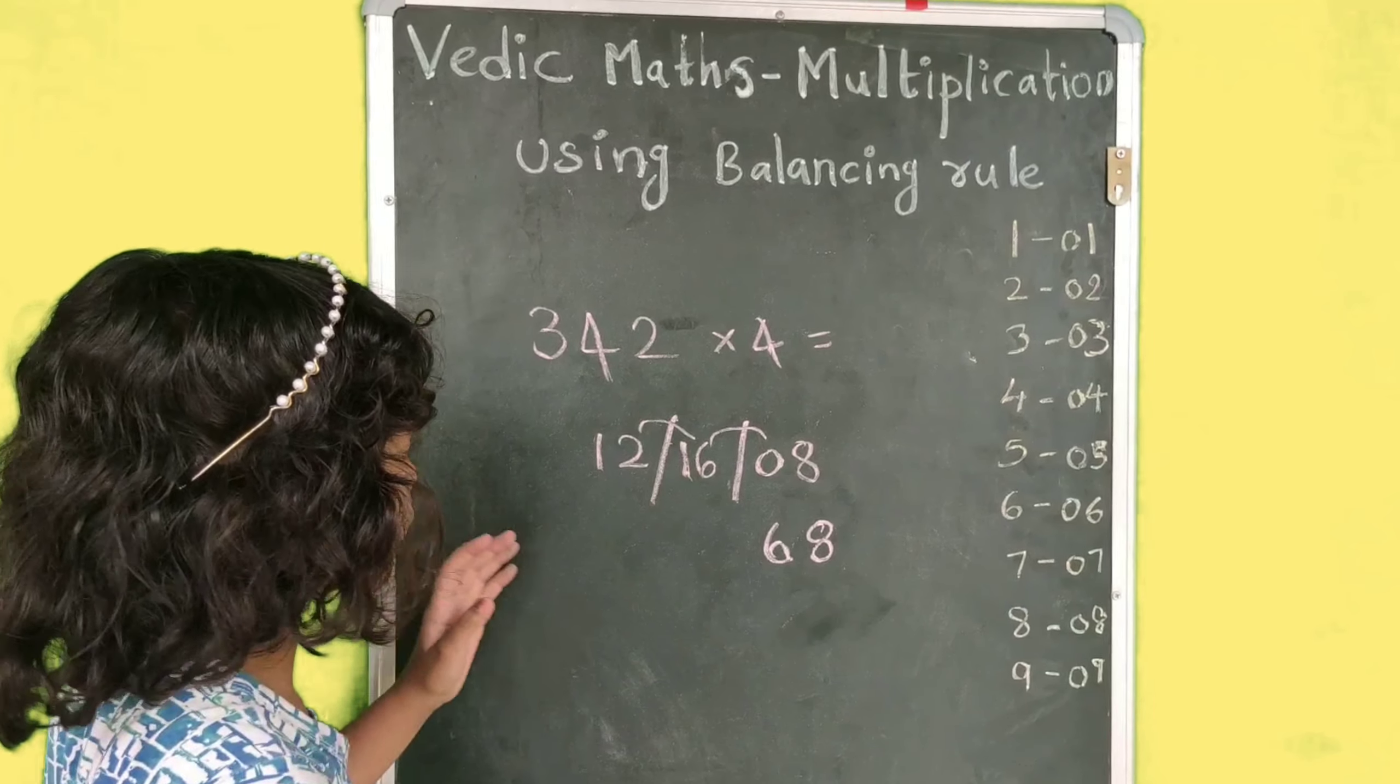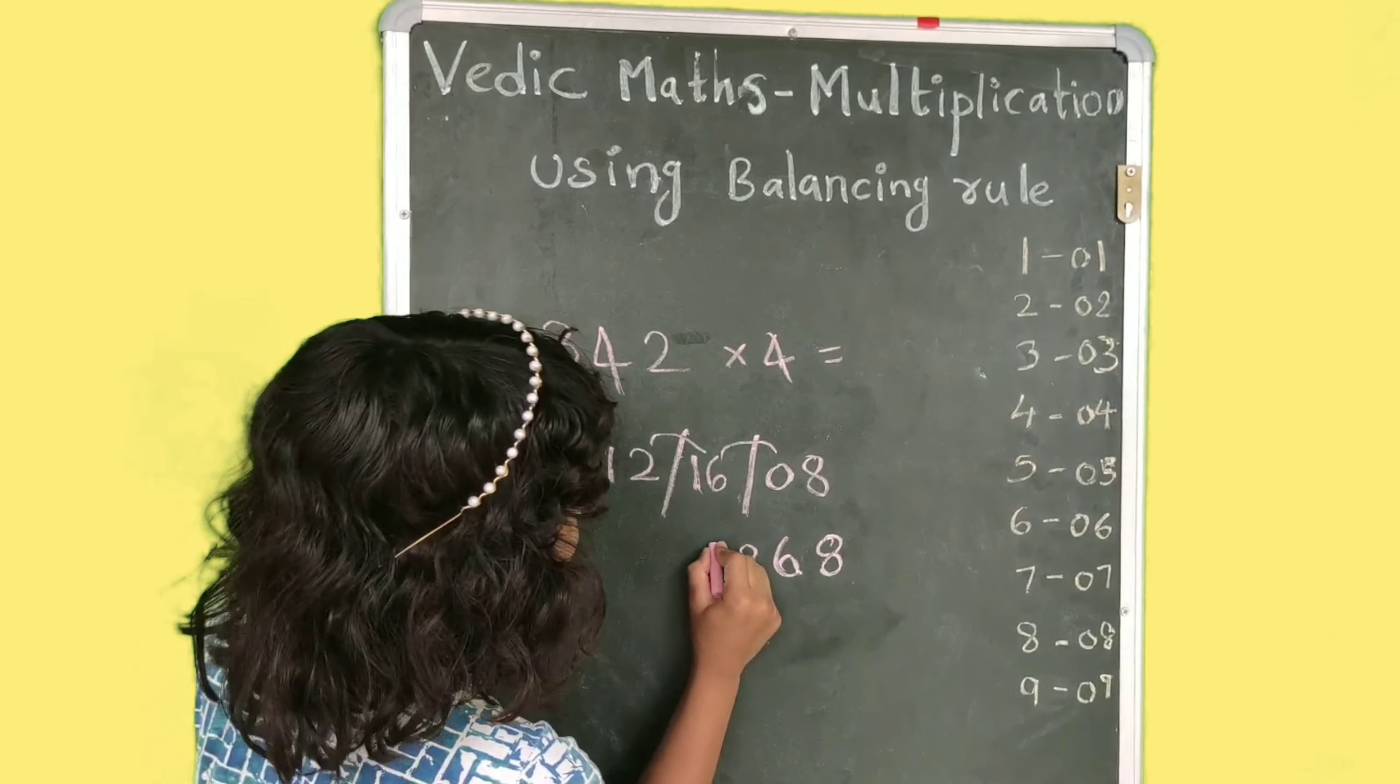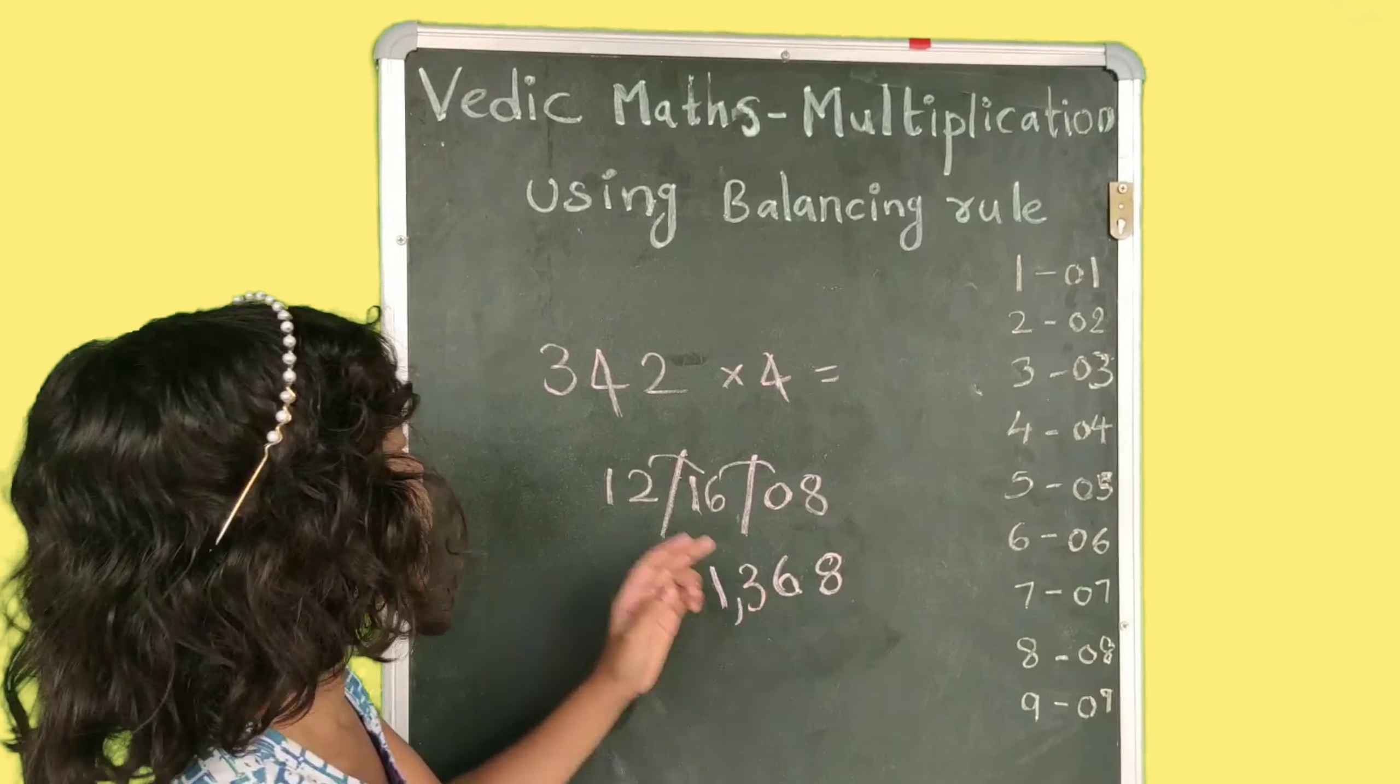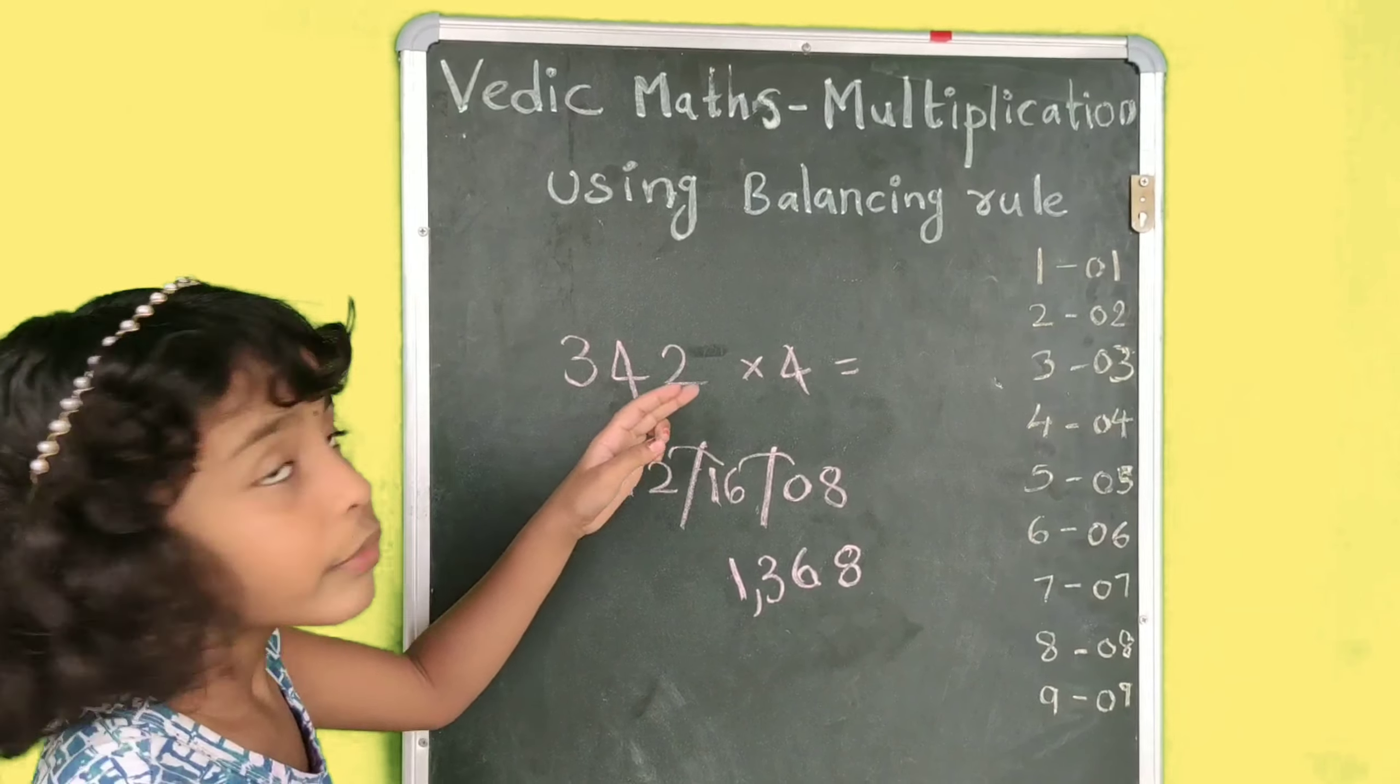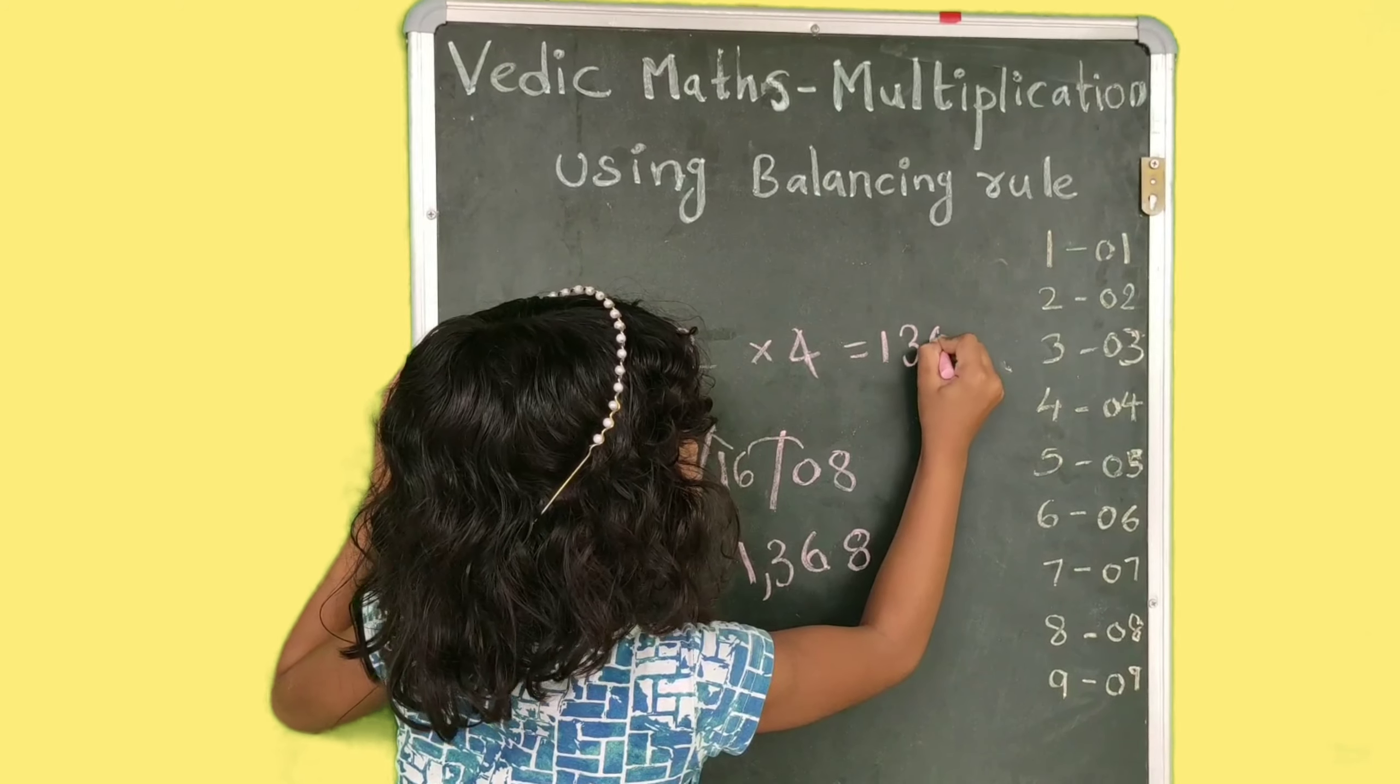E1 ni 2 ni plus chedhaan. 1 plus 2, 3. So the answer is 1368. 342, four star, 1368.